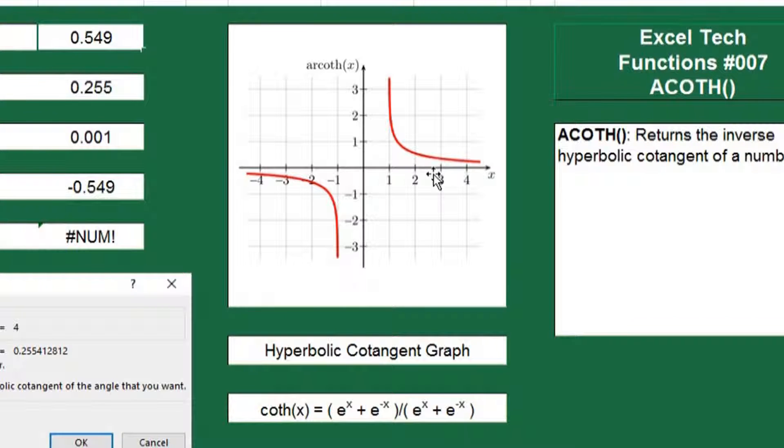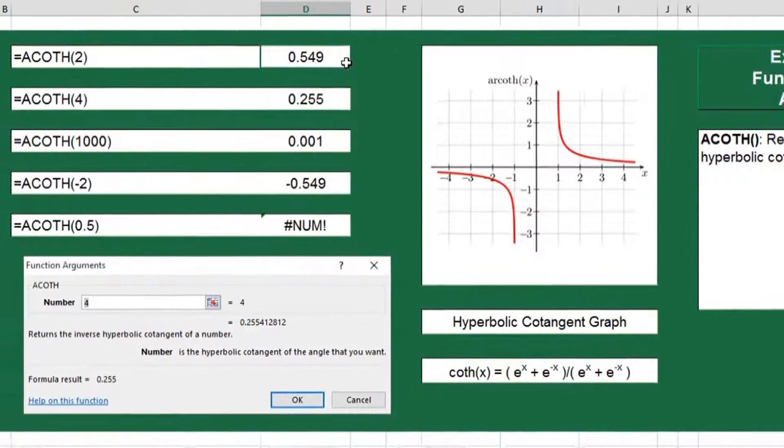We're going to enter the inverse hyperbolic cotangent values which will search the x coordinates and return the y coordinates where the line intersects. So let's start with the first example.